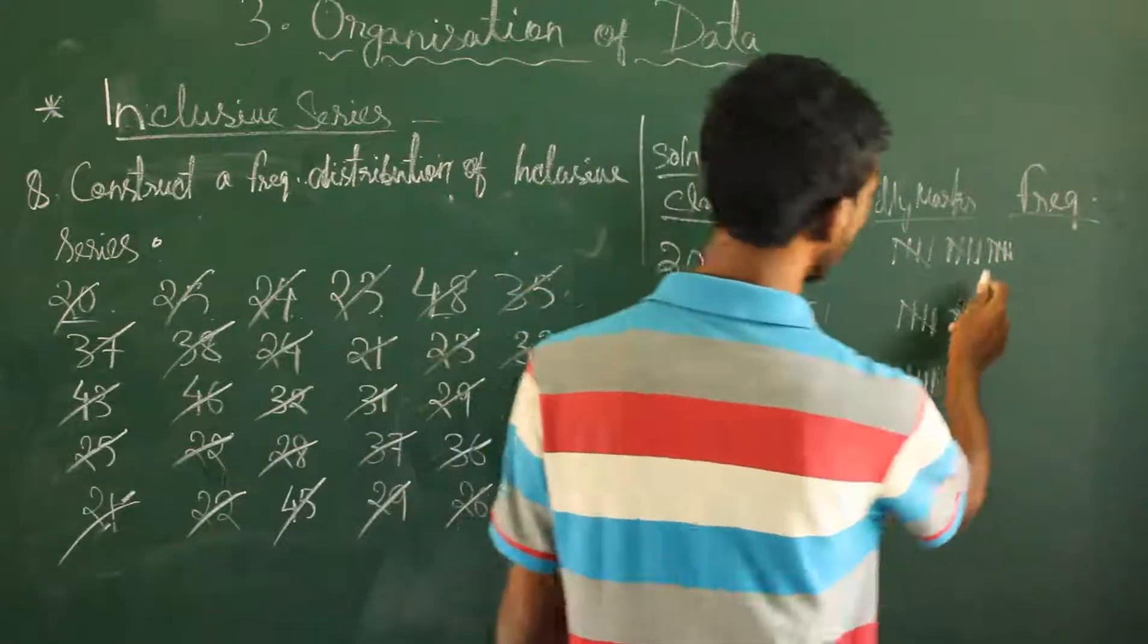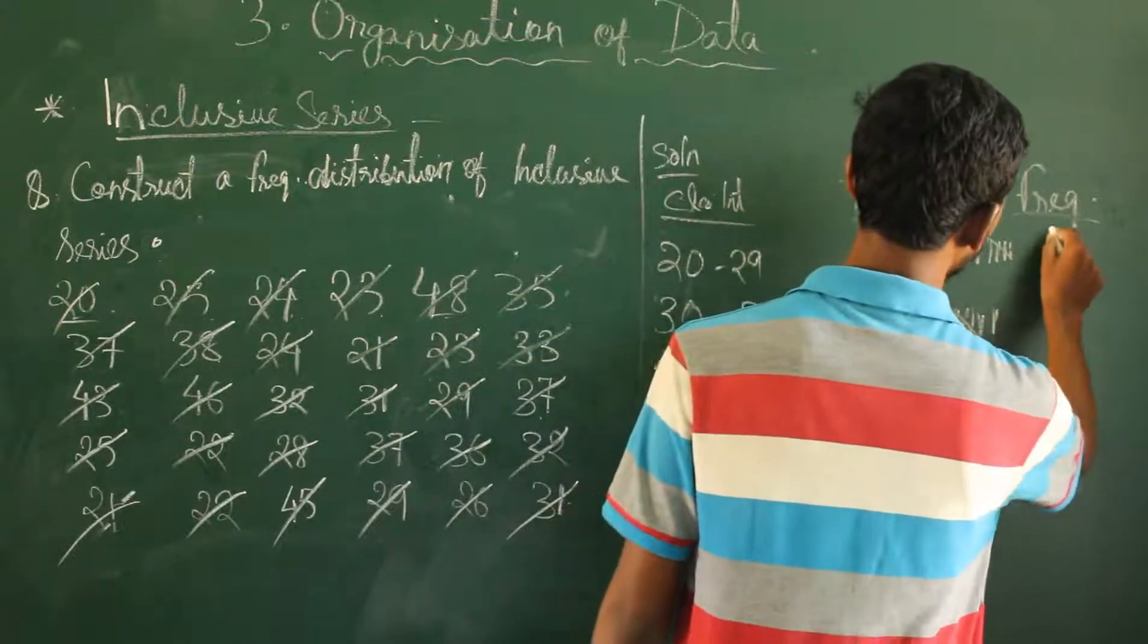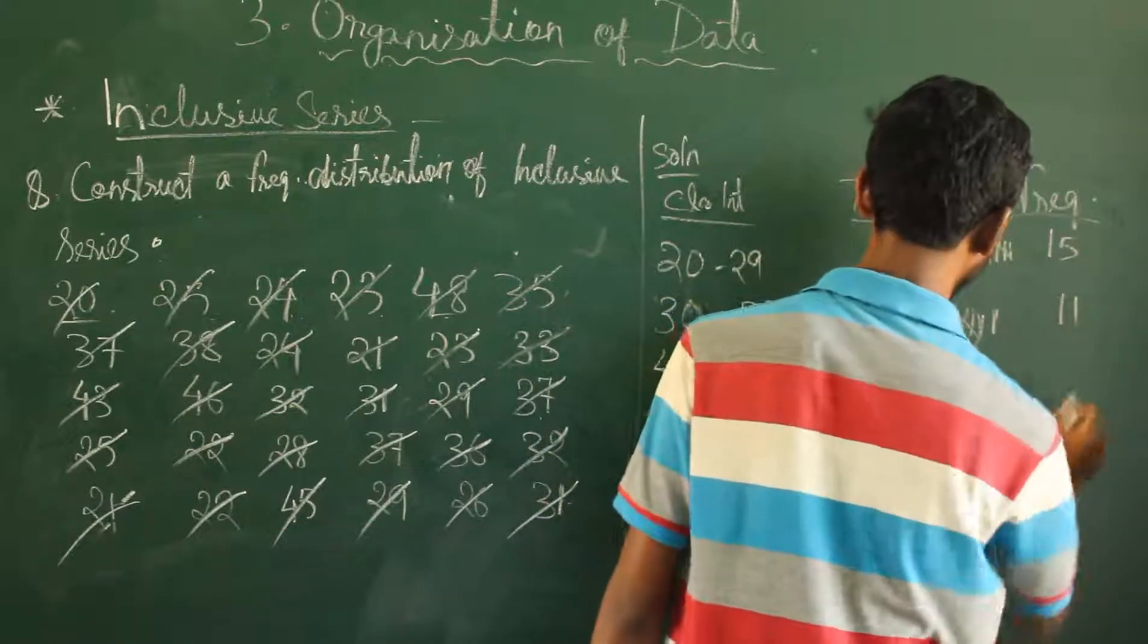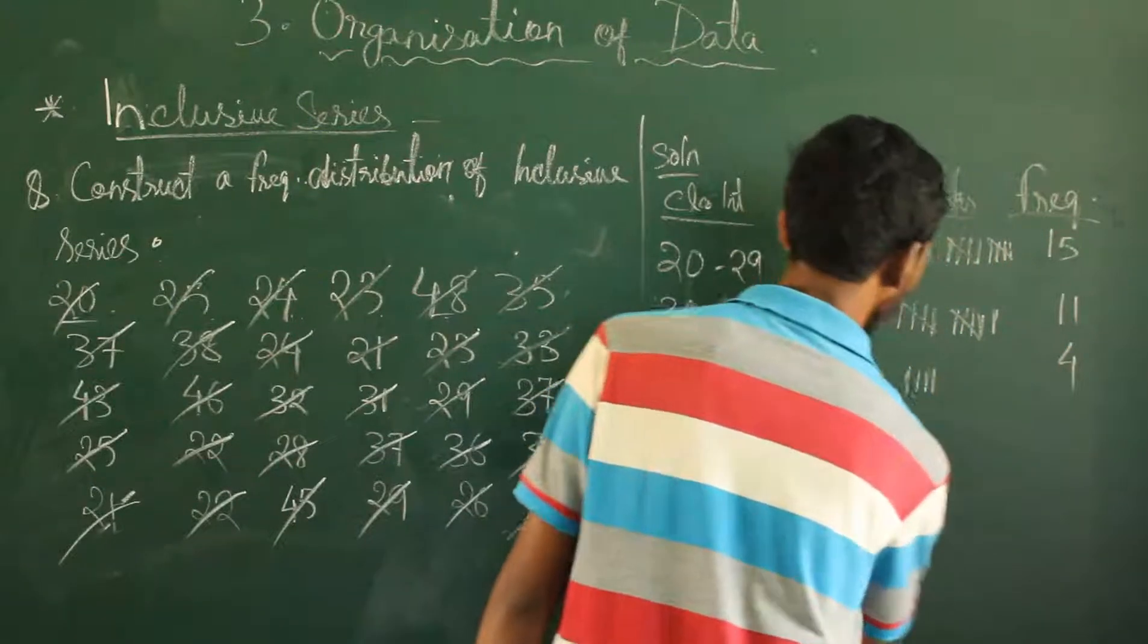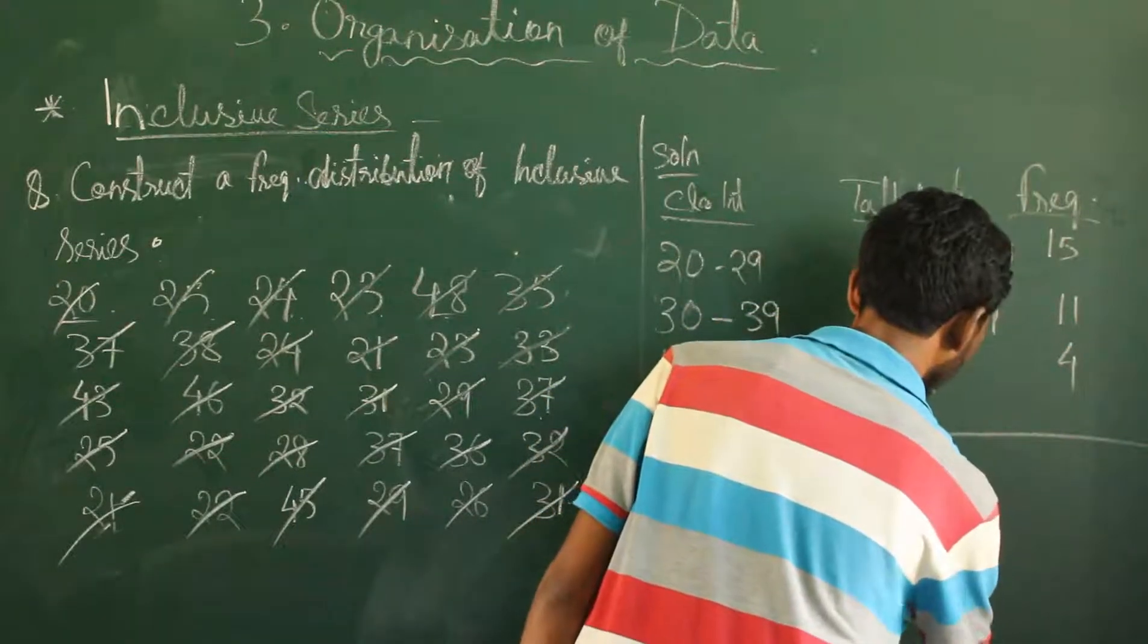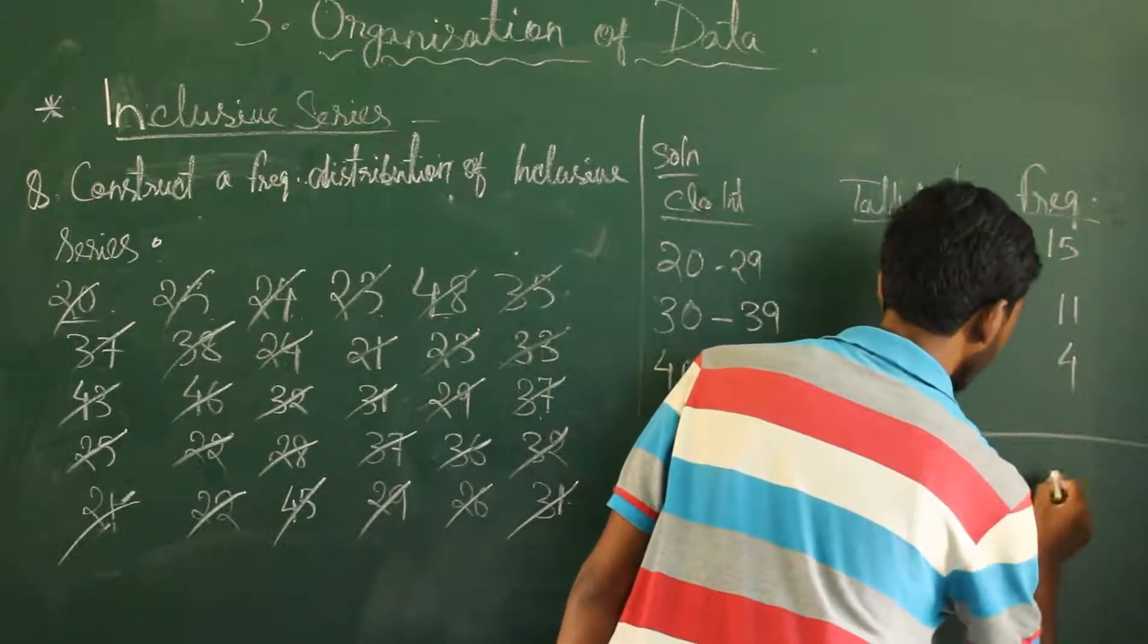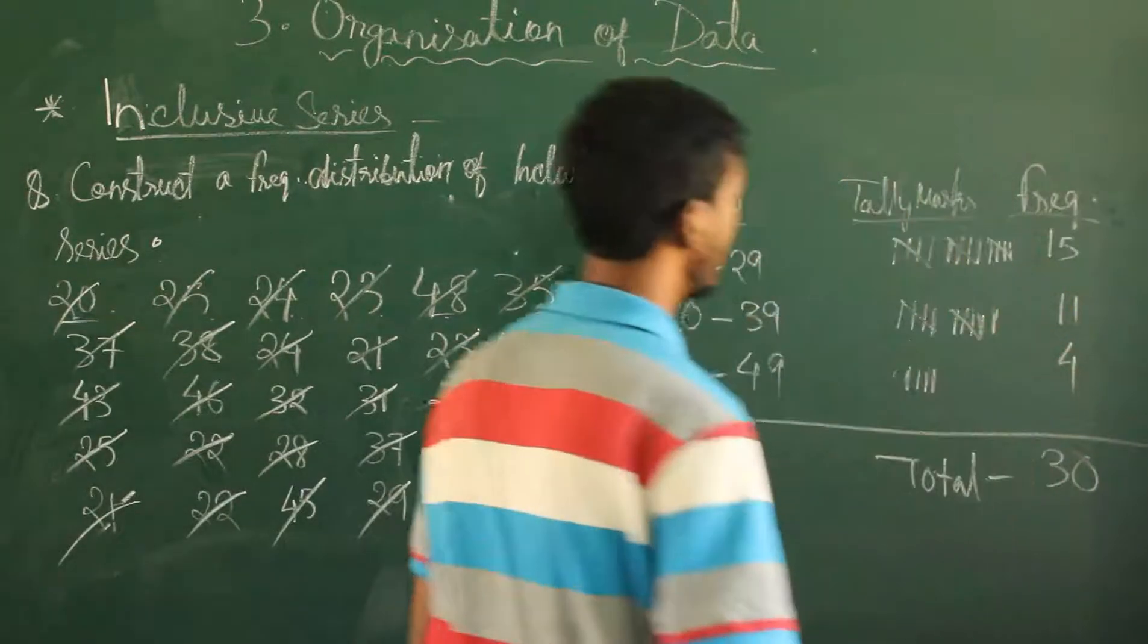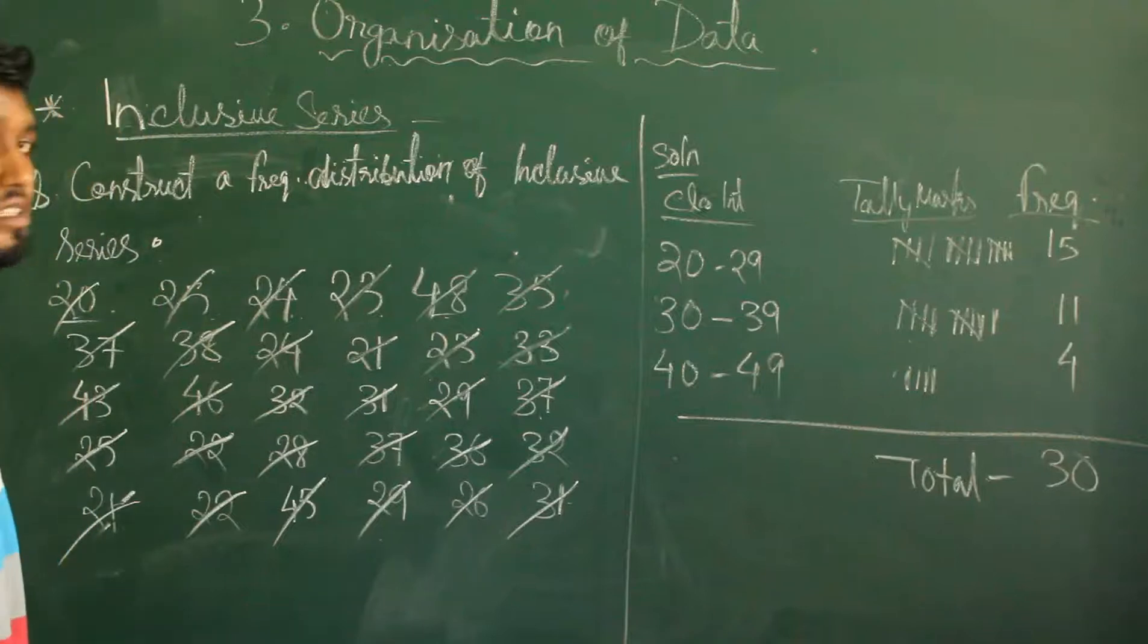Our frequency numbers are 15, 11, 4, 4. Total frequency number is 33. This is the end of the inclusive series.